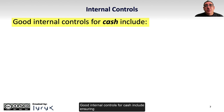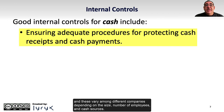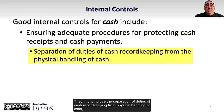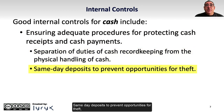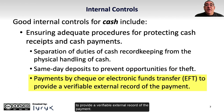Good internal controls for cash include ensuring adequate procedures for protecting cash receipts and payments, and these vary among different companies depending on the size, number of employees, and cash sources. They may include the separation of duties of cash record-keeping from physical handling of cash, same-day deposits to prevent opportunities for theft, or payments by check or electronic funds transfer (EFT) to provide a verifiable external record of the payment.